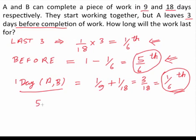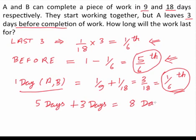So A and B work together and need to finish 5/6 of the work. In one day they finish 1/6 of the work, so A and B will work together for 5 days to finish 5/6 of the work. In the last 3 days, B working alone finishes the rest. Total time taken is 5 days + 3 days = 8 days.